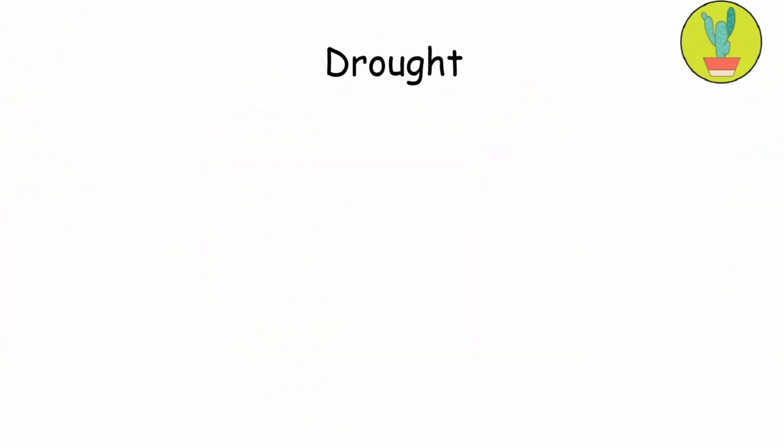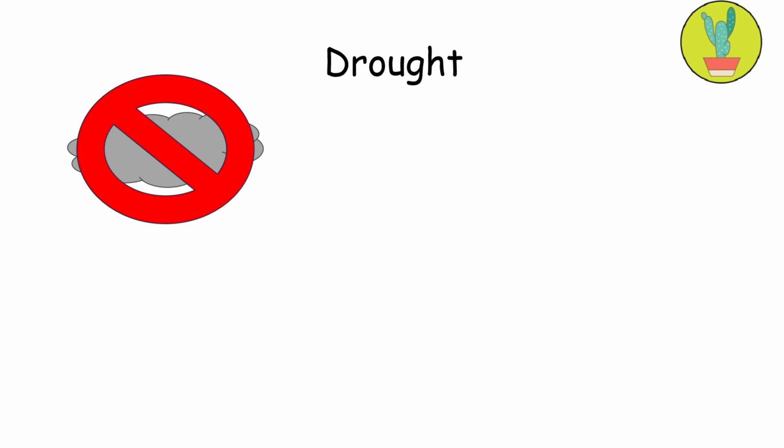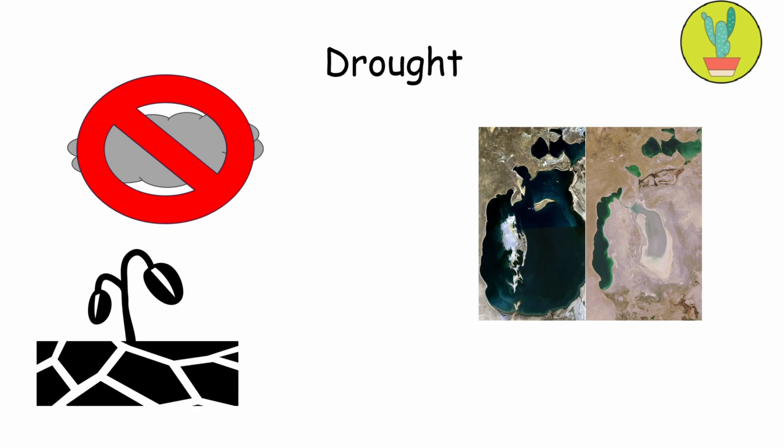A drought is an extended period of abnormally low precipitation, leading to water scarcity and dry conditions across a region. Droughts can have significant impact on agriculture, water supplies, and ecosystems. These events can develop gradually over months or even years, as precipitation levels lower and water sources such as rivers, lakes, and groundwater reservoirs become depleted. Droughts can be exacerbated by factors such as high temperatures, increased evaporation rates, and changes in land use and water management practices.